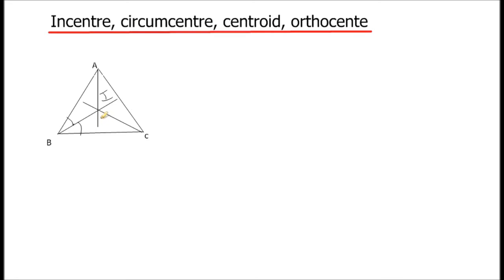This common point, in-center, is equidistant from the three sides of a triangle. If we draw perpendiculars from this in-center — the red line is perpendicular to BC, perpendicular to AC, and perpendicular to AB — all these three perpendicular distances are equal.